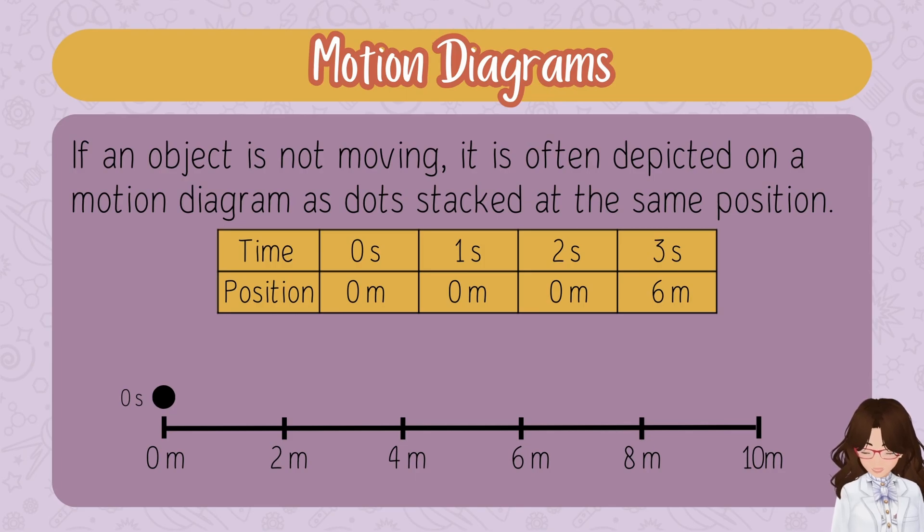In this case, at zero seconds the object is at zero meters, but at one second it's also at zero meters, so I stack it. At two seconds, still at zero meters, I stack again. It's my personal preference to annotate the time, but feel free to just leave the dots. At three seconds, the object started to move to six meters, then you would continue with your motion diagram like normal.